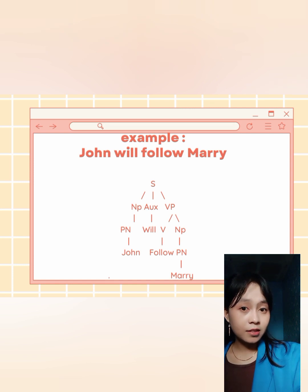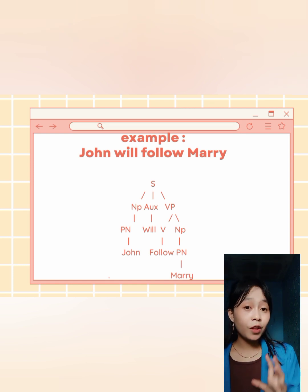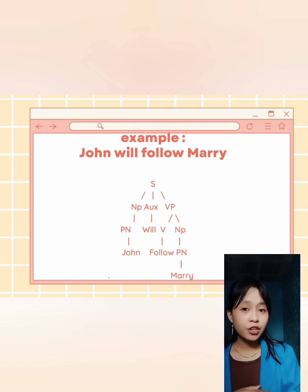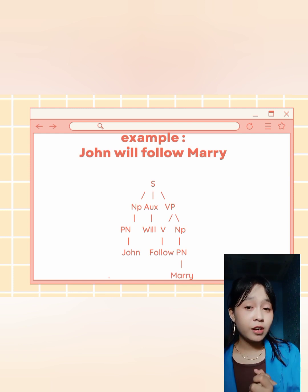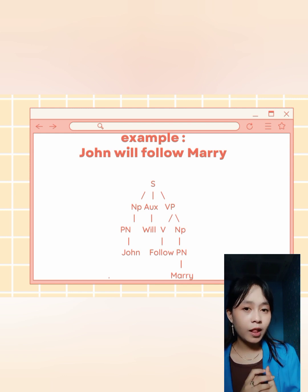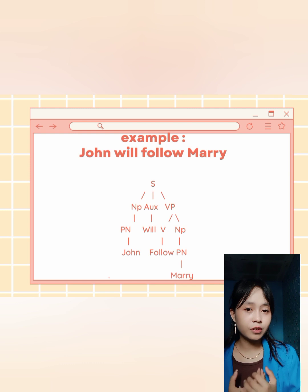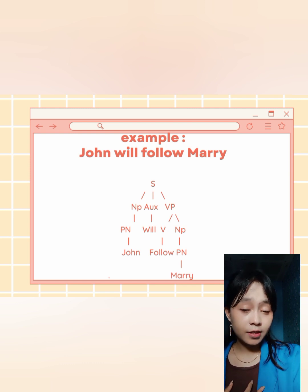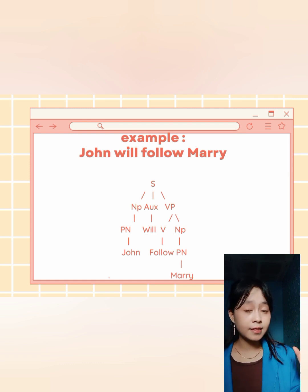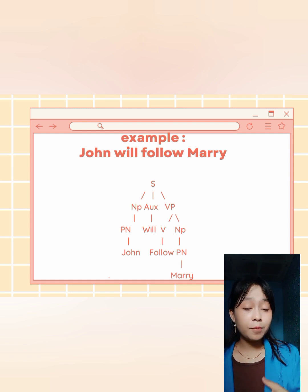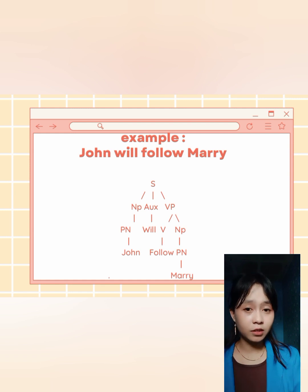The next example is: 'John will follow Mary.' We analyze this sentence: 'John' is a proper noun, 'will' is an auxiliary, 'follow' is a verb, and 'Mary' is a proper noun. First, we write S at the top. Under the sentence, there are NP, auxiliary, and VP. Under NP, there is a proper noun, which is John.